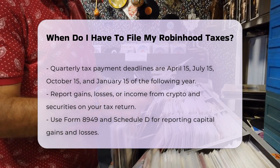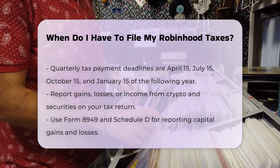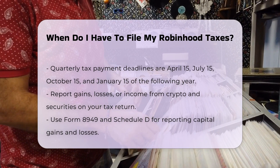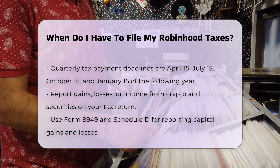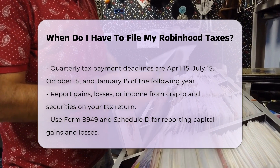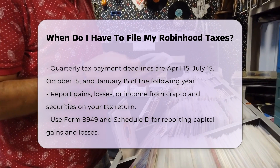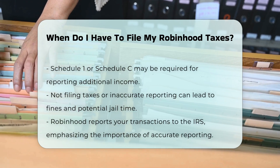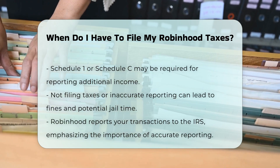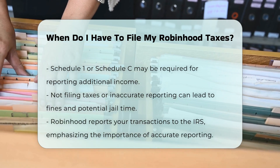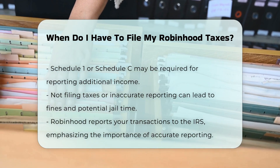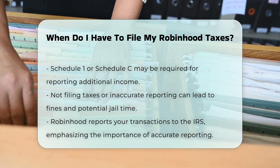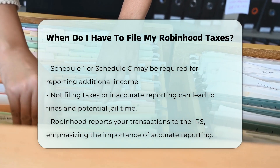Reporting Crypto and Securities: for crypto and securities transactions on Robin Hood, you will need to report any gains, losses, or income on your tax return. This involves using Form 8949 and Schedule D for capital gains and losses, and potentially Schedule I or Schedule C for additional income.